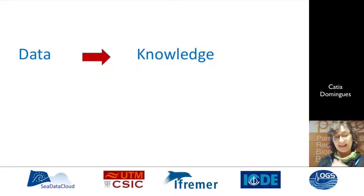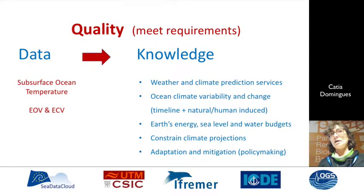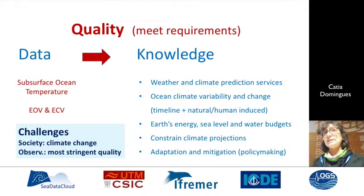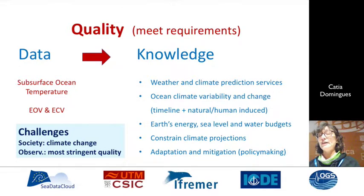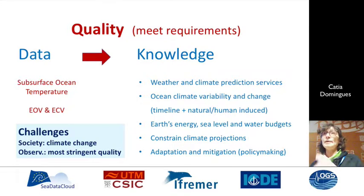As was mentioned yesterday, we need to meet some quality requirements for data if you want to transform this data into knowledge. The focus of ACOT currently is on subsurface ocean temperature, and this variable is both an essential ocean variable and an essential climate variable. Climate change is a big challenge for observations as it requires the highest quality standard possible. If we meet the quality standards for climate studies, research and services, we will be meeting all other requirements for other applications of this data.